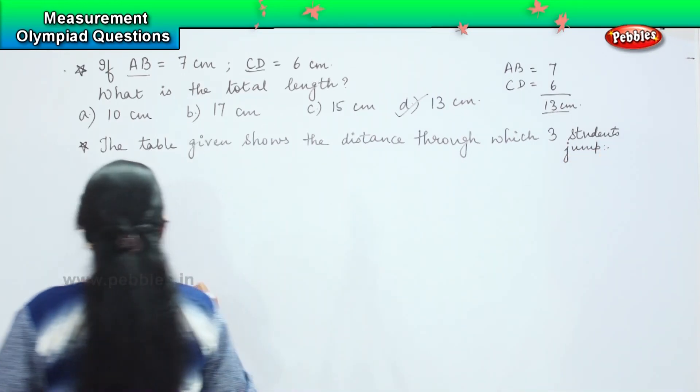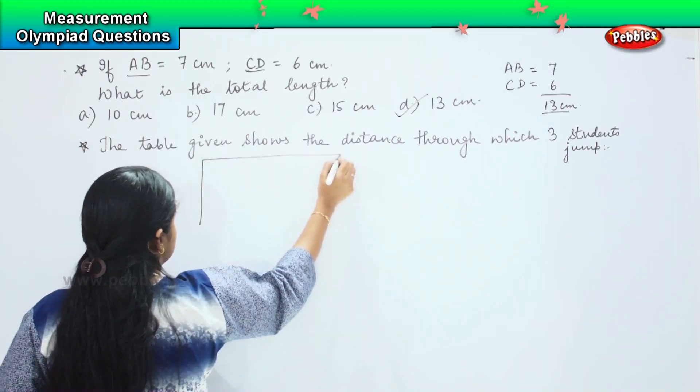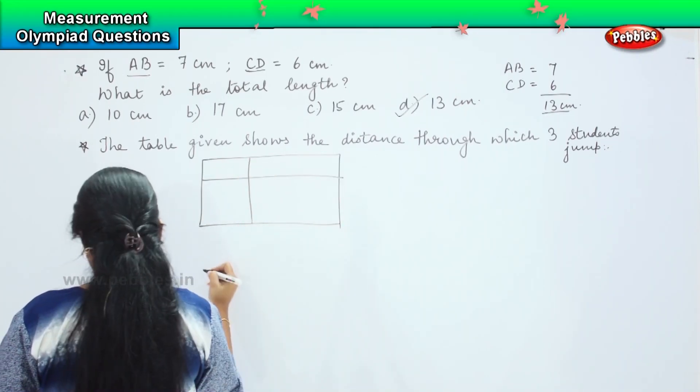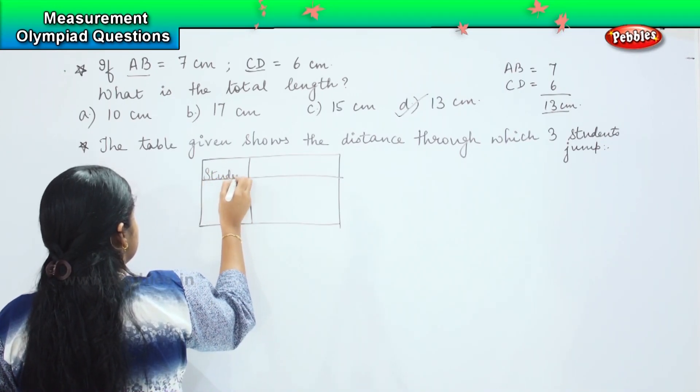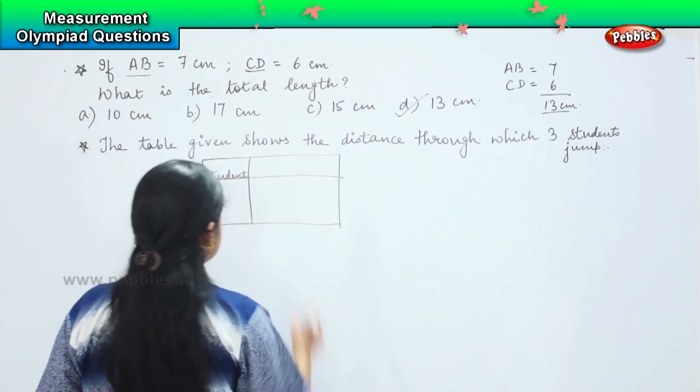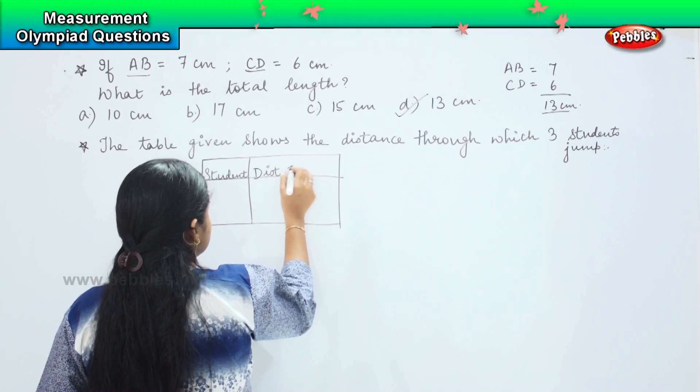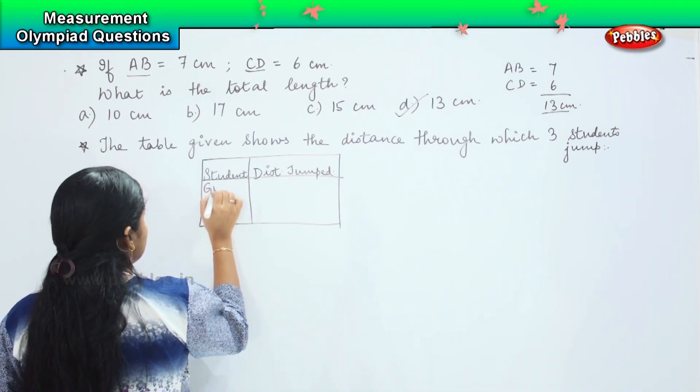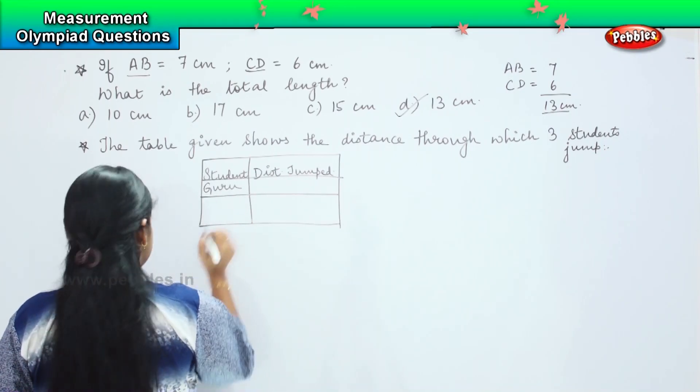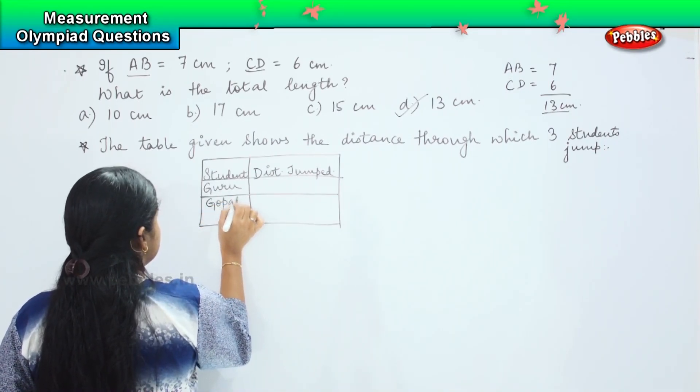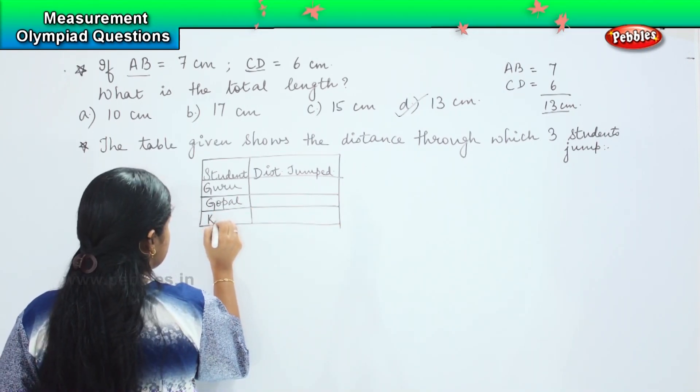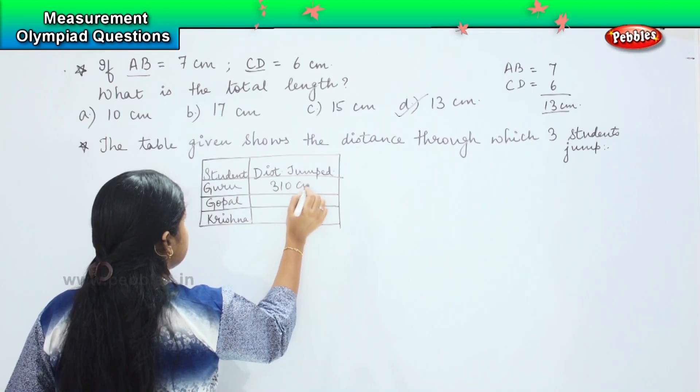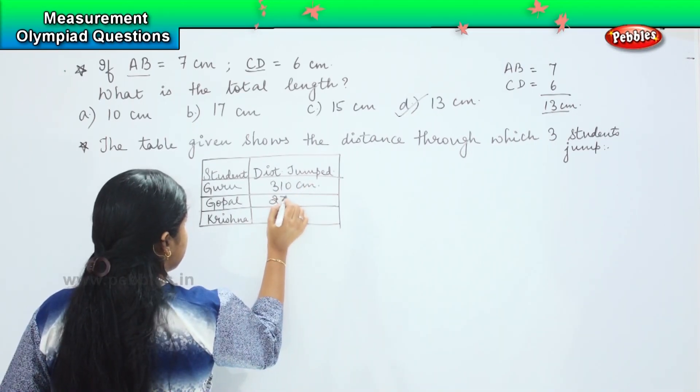So here is the table for you. This is the student and this is the distance jumped. First one is Guru, second one is Gopal, and the third one is Krishna. First one is 310 centimeter, second is 270 centimeter, and the third one is 290 centimeter.